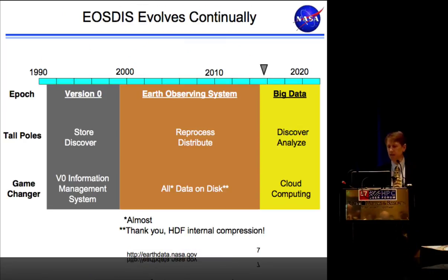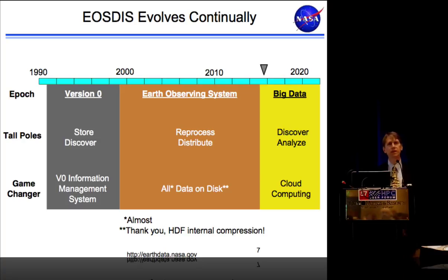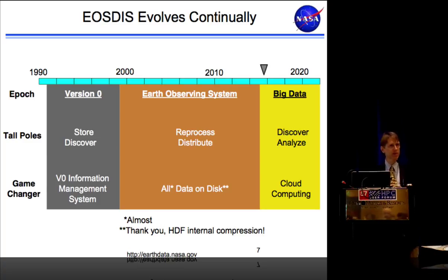I want to talk primarily about evolution. I've split EOSDIS evolution into three main eras. It started with a system called the version zero system, meant to be an operational prototype — an oxymoron that gave system engineers fits, since we were expected to push the bleeding edge while also being operational to users. In that phase, up to around 1998-1999, the two tall poles were being able to store the data and being able to discover it, which led to our first information management system and data search client spanning all the DACs.